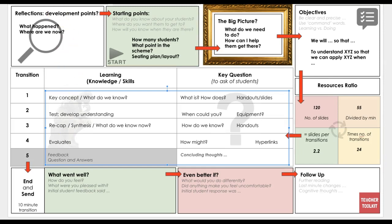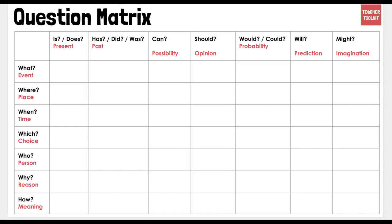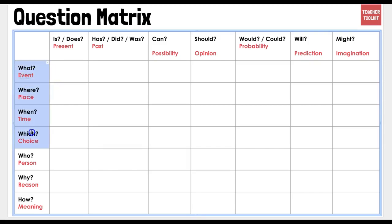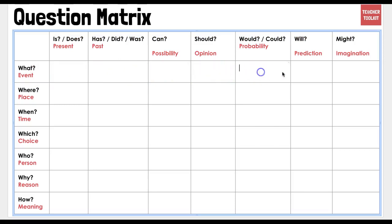This is a question matrix, and you can find this on teachertoolkit.co.uk as a blog and a resource. It's a nice way to frame questions regardless of where you are in a scheme of work or curriculum. By asking a question from the left and attaching it to something from the top, I could ask: what is, what has, what can, what should, what would, what will, what might. Moving into synthesis and evaluation: why does, why has, why can, why would, why will, how might. It allows you to pitch questions and challenge, and you might want to target these to various groups of people. Create your own or dig one out at teachertoolkit.co.uk.